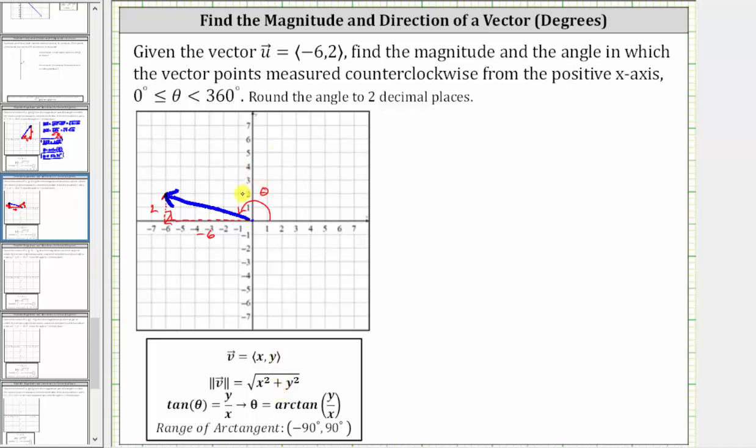For the direction of the vector, because we're on the coordinate plane, we have tangent theta is equal to y divided by x, and therefore theta equals arc tangent of y divided by x.